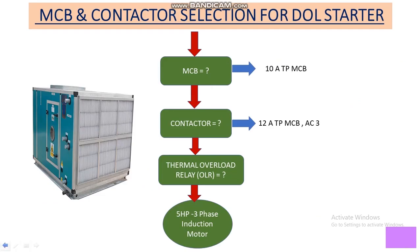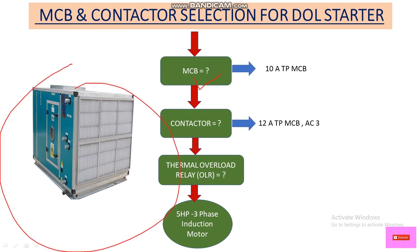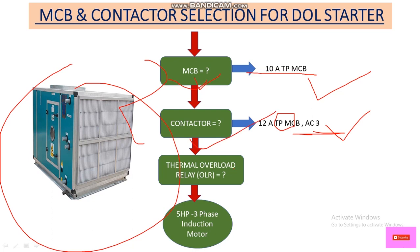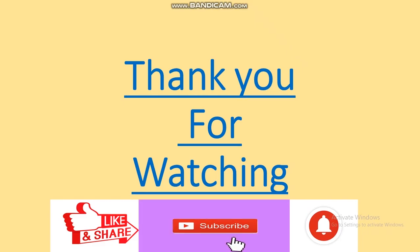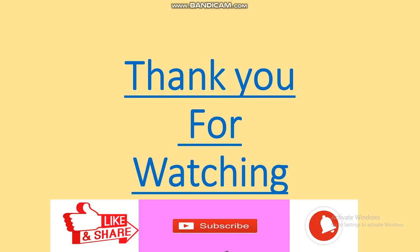Finally, our calculated results: for this AHU's DOL starter, the MCB size is 10 A TP MCB and the contactor size is 12 A TP AC3 type. In this video, we have selected the MCB and contactor. In the next video, we will talk about thermal overload relay sizing and selection. Hope you guys understand how to select the contactor and MCB for a DOL starter. Thank you for watching — please like, share, comment, and subscribe, and hit the bell icon for notifications. Thank you very much. See you again in the next video.